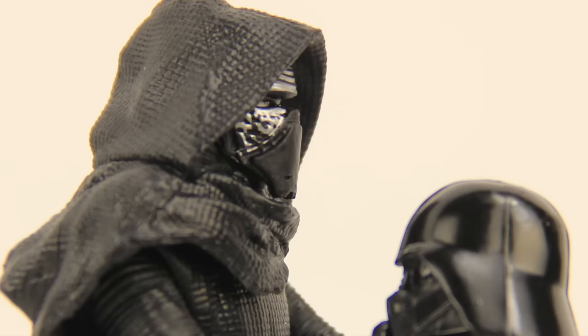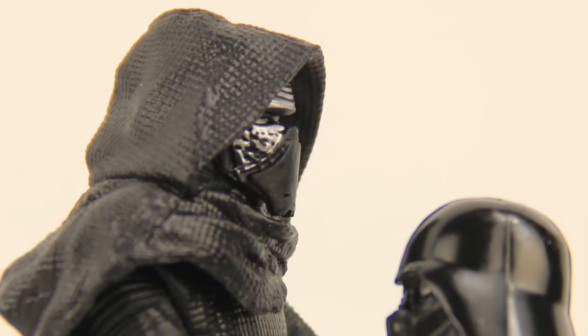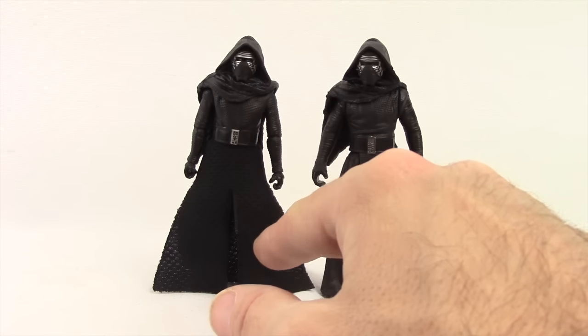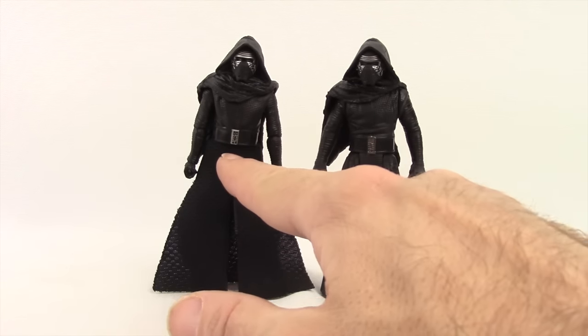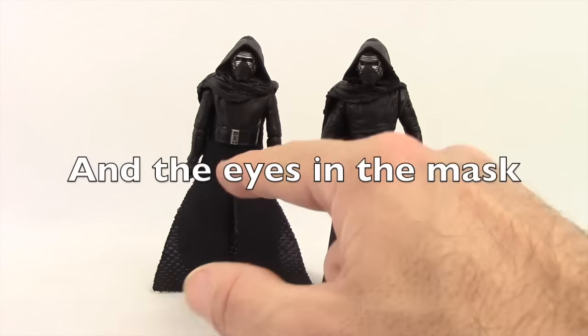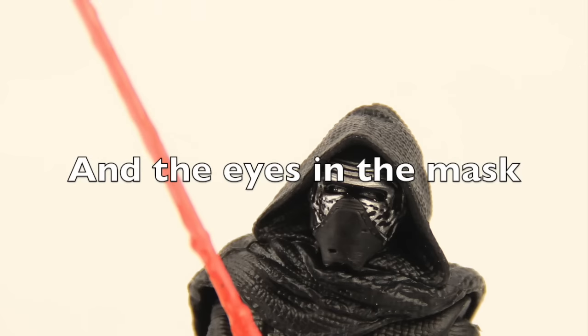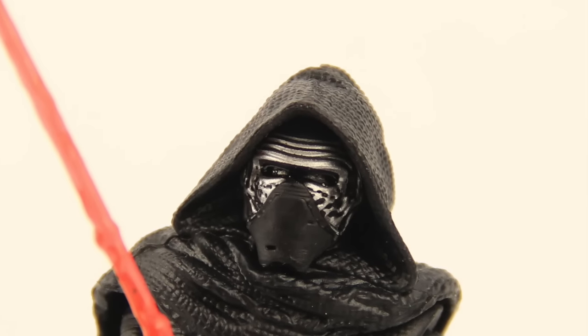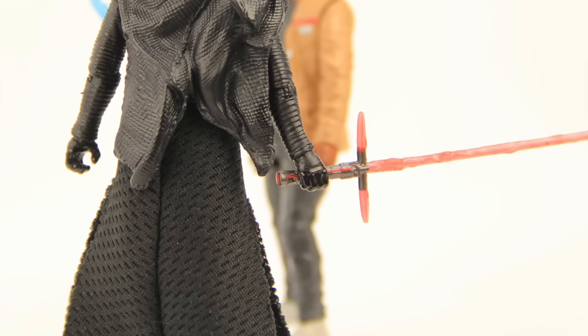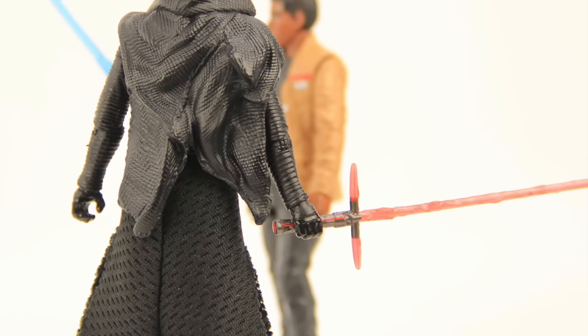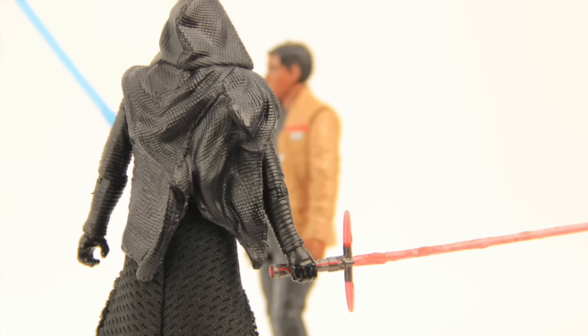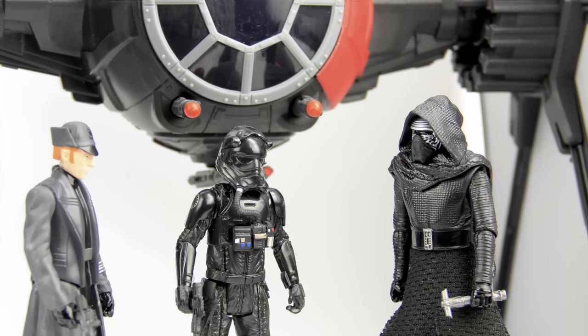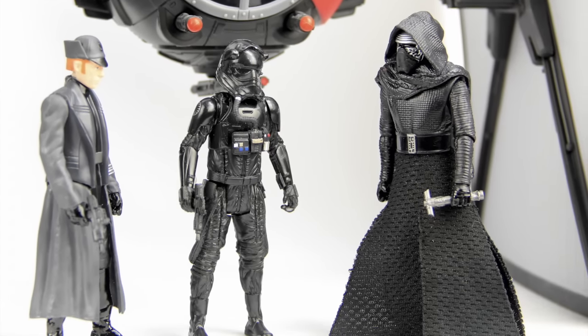I would have liked to have seen maybe a bit more articulation. Detail-wise, there's not a lot of differences between the two figures. Like I said, this has got the soft goods skirt piece on the lower body, and it got a little more paint detail on the belt buckle, but that's pretty much it. Otherwise, detail-wise, everything is about the same between these two figures. Is it really worth the extra cost? I don't know. I'd be interested to hear from you all what you think. If you think it's worth paying thirteen dollars for just a few more points of articulation basically.